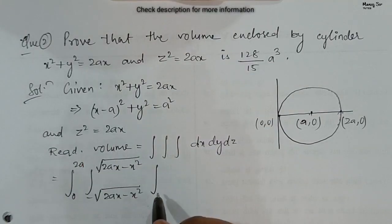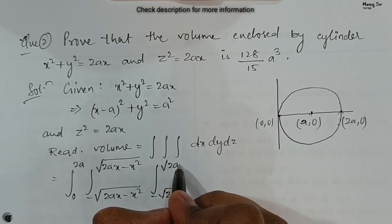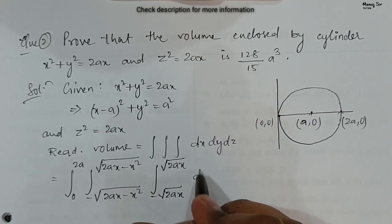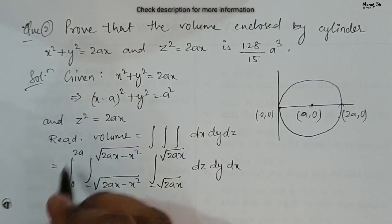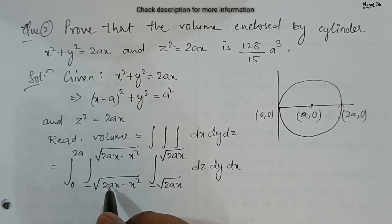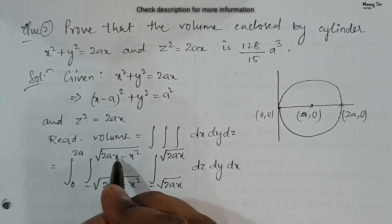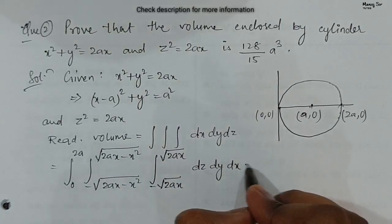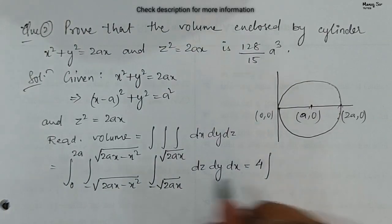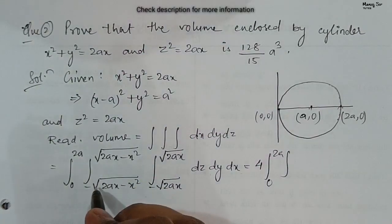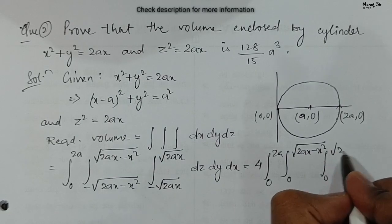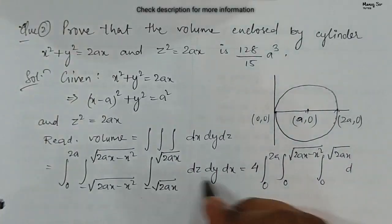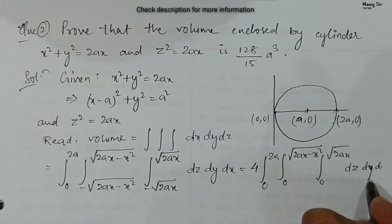By symmetry, since the z-limits are from −√(2ax) to +√(2ax) and y-limits are symmetric about zero, we can write a factor of 2 for each, giving an overall factor of 4. The simplified limits become: x from 0 to 2a, y from 0 to √(2ax − x²), z from 0 to √(2ax), with order of integration dz dy dx.